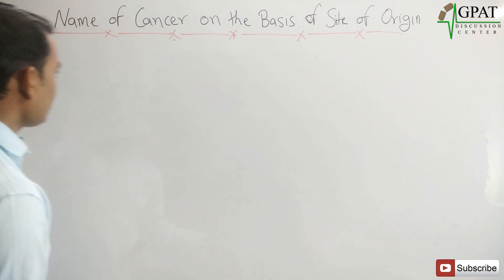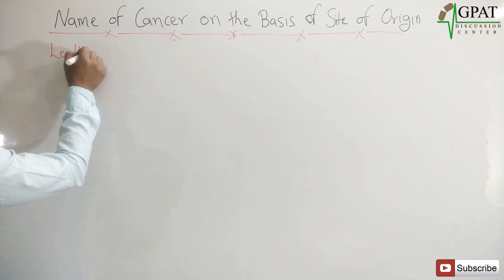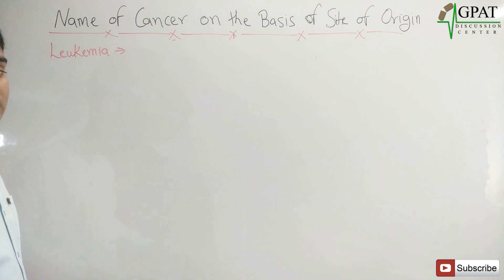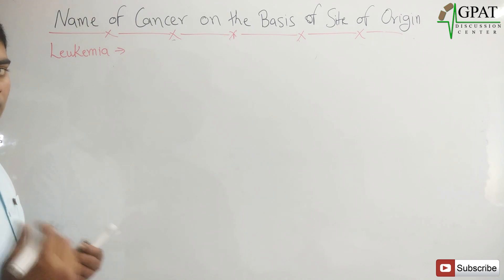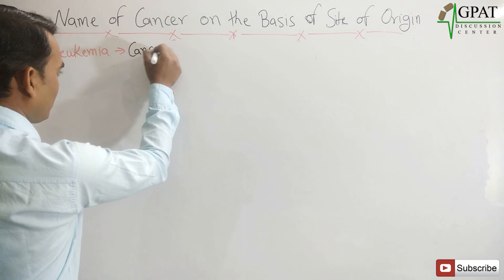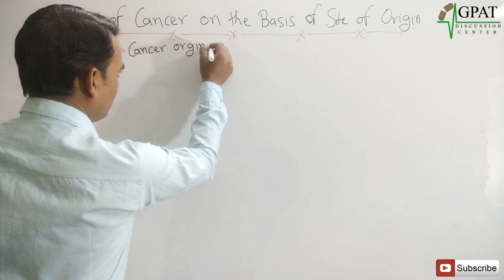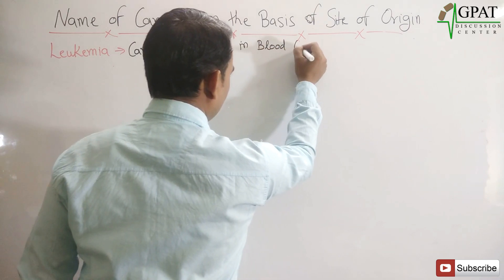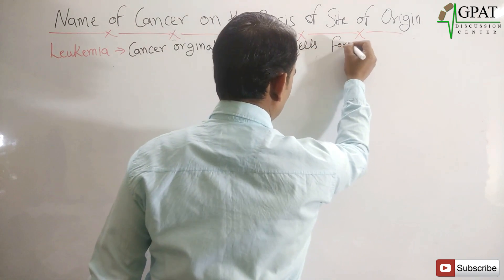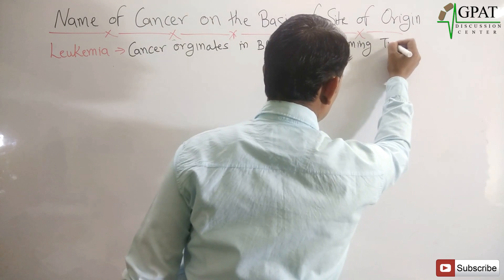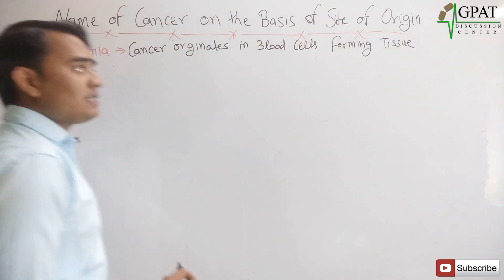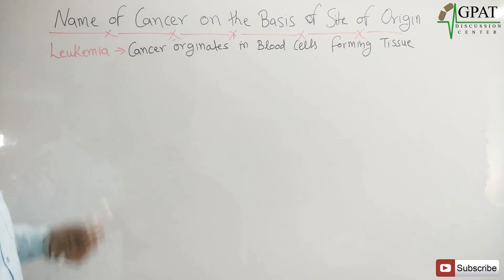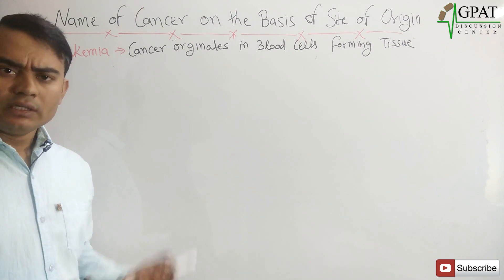First we will discuss about leukemia. Leukemia is the cancer that originates in blood cell-forming tissue. When the blood cell-forming tissue has cancer, that cancer is known as leukemia, or simply the cancer of blood.